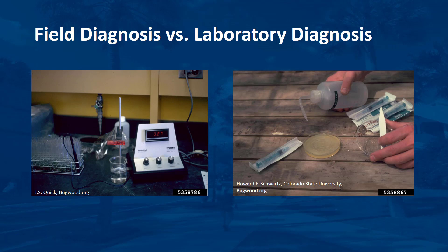Just because a laboratory report suggests deficiencies of one or more nutrient elements or the presence of potential pathogens does not mean that those deficiencies or pathogens are the actual cause of the particular problem. In the case of palm diseases, false negatives are a common problem, especially when the wrong tissue is sampled or a poor quality sample is submitted to the laboratory.